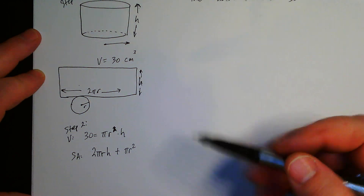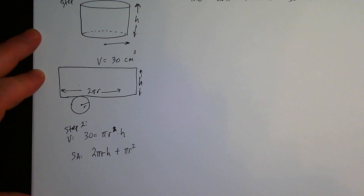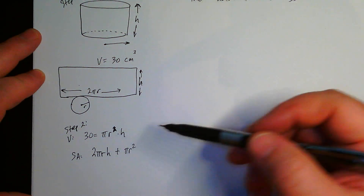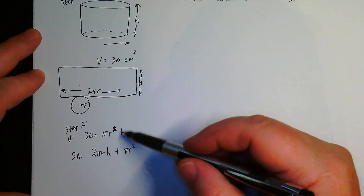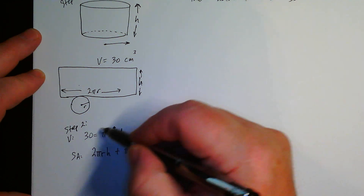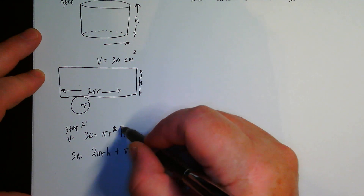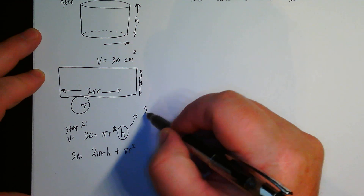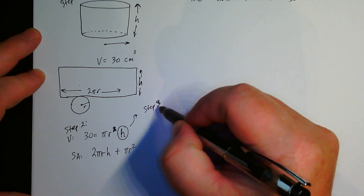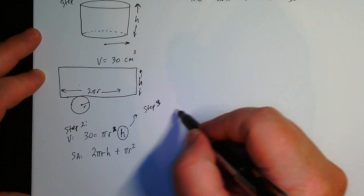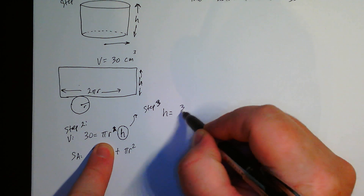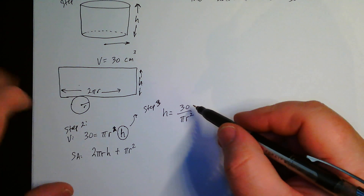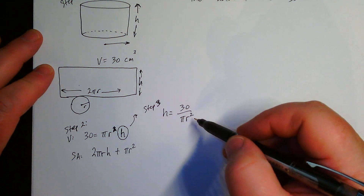Now we want to reduce these two formulas down to one variable. Step 3 is to solve one formula for one variable. I'm going to solve the volume formula for H. I'll divide both sides by πr², giving me H equals 30 divided by πr².